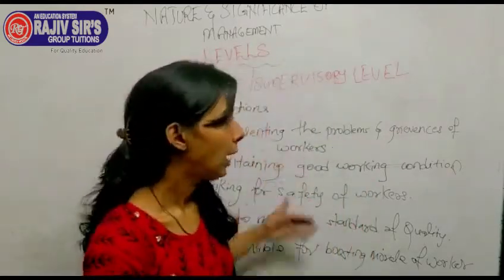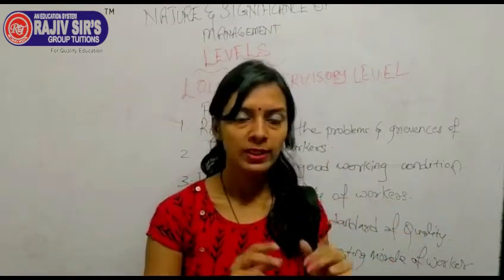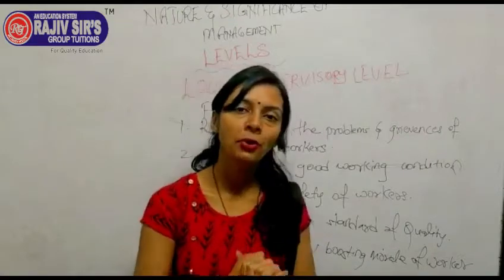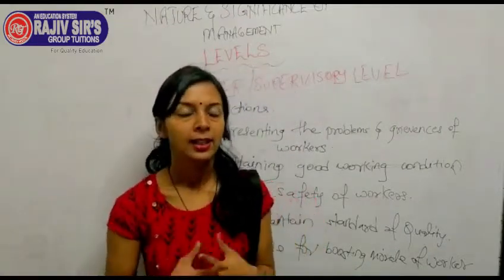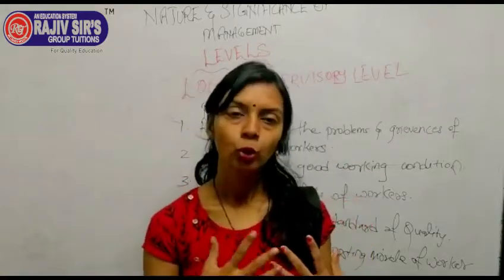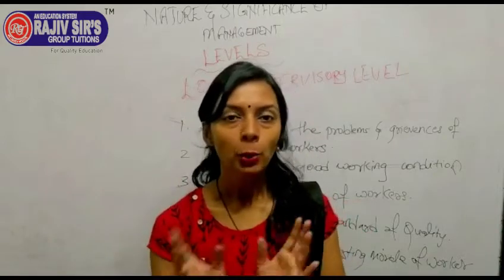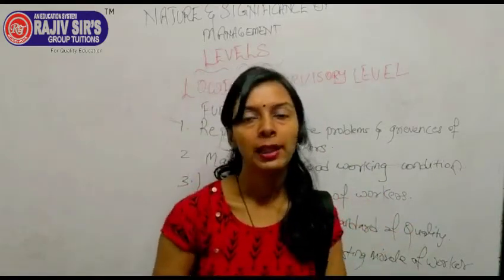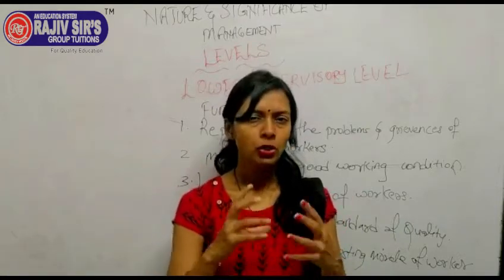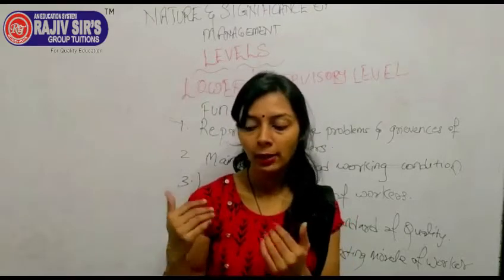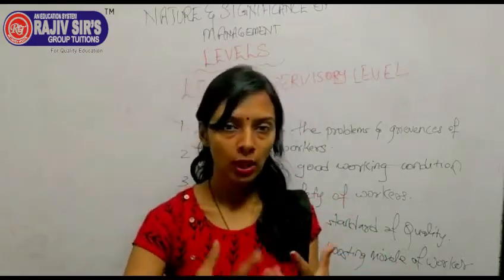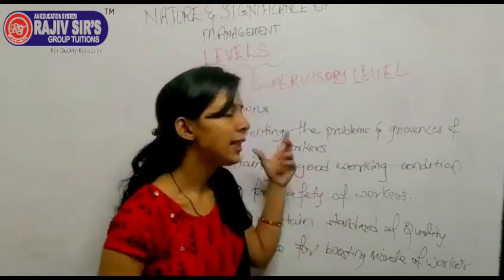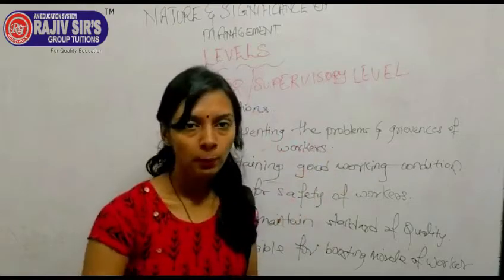What are their functions? The first function is representing the problems and grievances of workers. If a supervisor or foreman has a problem, issues, or grievances, they cannot directly call the company chairman or CEO. Because the scalar chain must be followed. The supervisor or sub-departmental executive will raise those problems, which then reach the middle level and then the higher level. So, the basic role is to take workers' problems up to the top level.